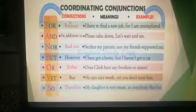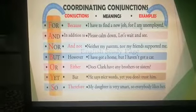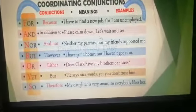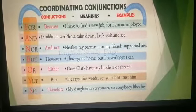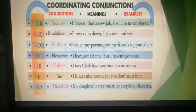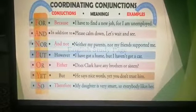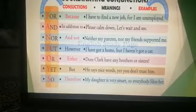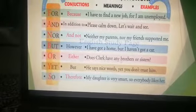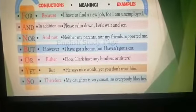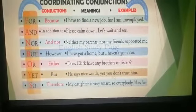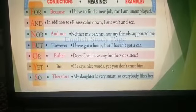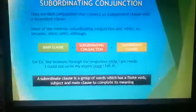Let's see more examples. 'For' is used to mean 'because': 'I have to find a new job, for I am unemployed.' 'And' means in addition to: 'Let's wait and see.' 'Nor' — neither/not: 'Neither my parents nor my friends supported me.' 'But': 'I have got a home but I haven't got a car.' 'Or' — either/choice. 'Yet' means but: 'He says nice words, yet you don't trust him.' 'So' means therefore: 'My daughter is very smart, so everybody likes her.'